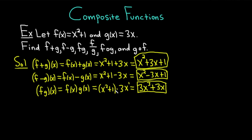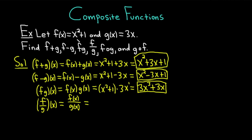Now we have (f/g)(x). This is just dividing, so the definition is f of x over g of x. F of x is x squared plus 1, and g of x is 3x. So (f/g)(x) = (x² + 1) / (3x). You can't really simplify further, so we'll just leave it there.